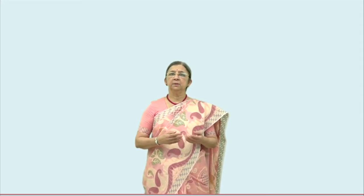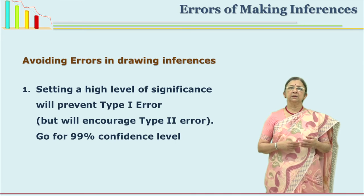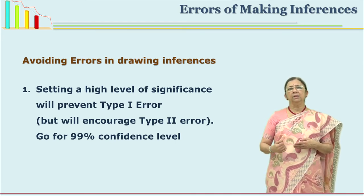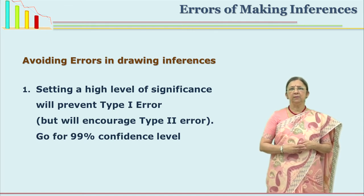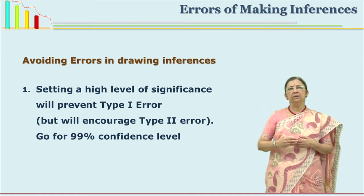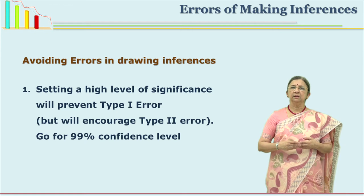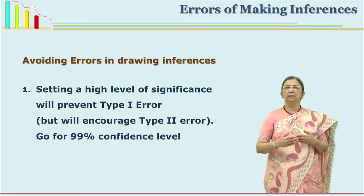You have to be extra careful because experiments in social sciences have impact on a larger public. Now how to avoid these errors? For Type 1 error, which is saying the difference is significant when it is not, if you are taking significance at say 90% level, you can increase the level from 90% to 99% — keep it at the highest so this error may not occur.